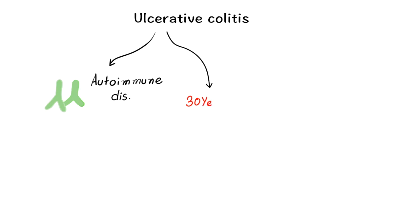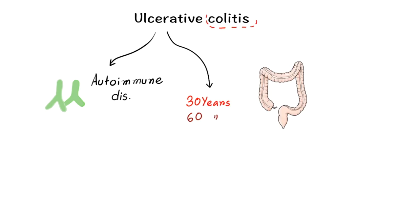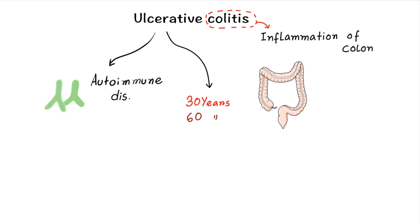Ulcerative colitis is an autoimmune condition. It is most common in the age group less than 30 years, and the second peak is at 60 years. Colitis refers to inflammation of the colon. In ulcerative colitis there is a continuous colonic lesion which always involves the rectum.